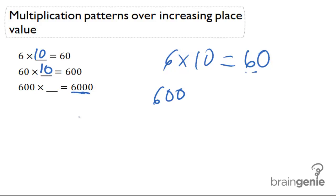And then that one extra 0 right there. So this one has to be 10 as well, and that's going to give us 6,000.